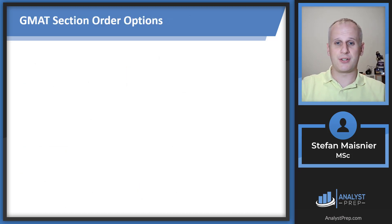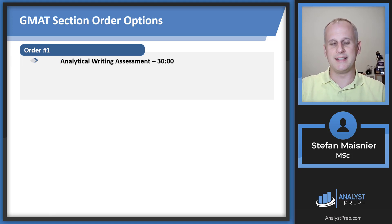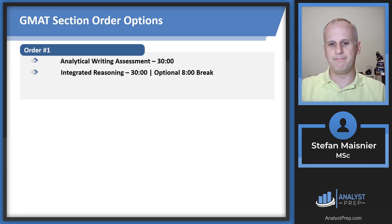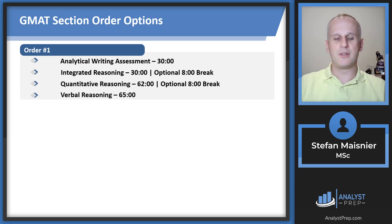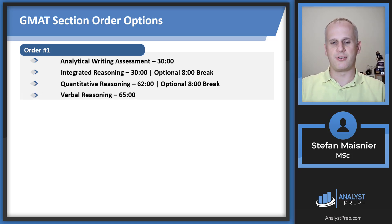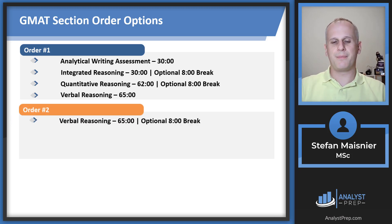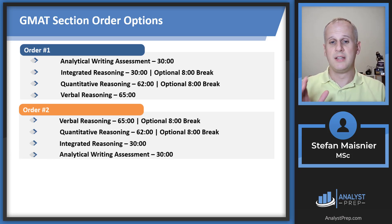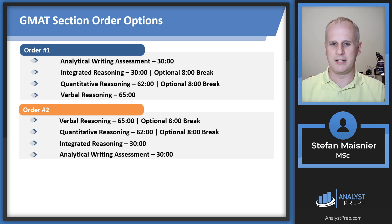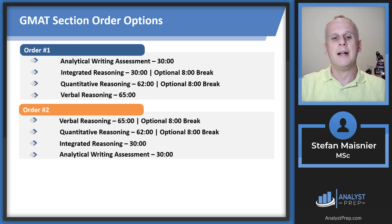Let's talk about the section ordering options. Order option one — GMAT Classic — is: analytical writing assessment first (30 minutes), then integrated reasoning (30 minutes), then an optional eight-minute break, then quantitative reasoning (62 minutes), then another optional eight-minute break, then verbal reasoning (65 minutes). In order number two, you do verbal first with an optional eight-minute break, then quantitative with another optional break, then integrated reasoning followed by the essay. The GMAC always makes the writing assessment begin or conclude all sections, so you can't do AWA and then IR in the middle.